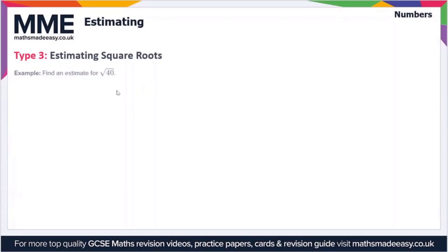The final skill we'll look at is estimating square roots. In this example, we're finding an estimate for the square root of 40. Let's write out some square numbers: 1 squared, 2 squared.